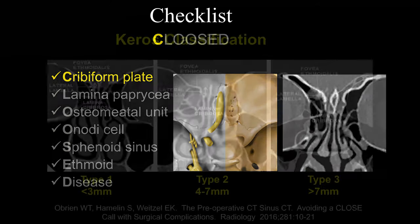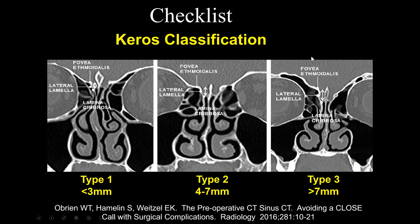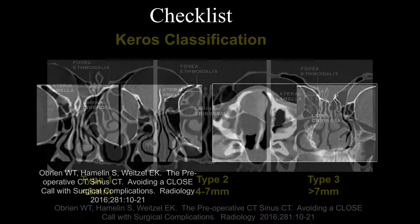The floor of this region is the cribriform plate, and this is our crista galli. There are various depths of the cribriform plate, categorized by the Keros classification: Keros type 1 is less than 3 mm depth, type 2 is between 4 and 7 mm, and type 3 is greater than 7 mm. I don't include the Keros classification in my report, but it forces me to look carefully at the anterior skull base and specifically the cribriform plate.